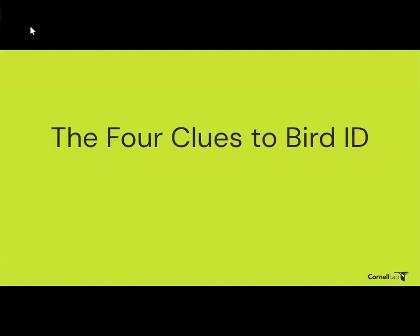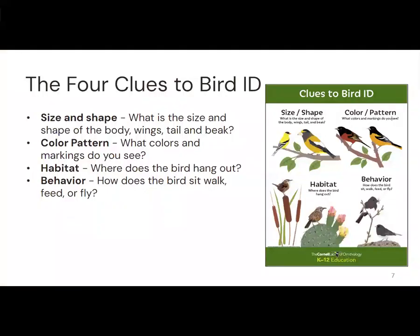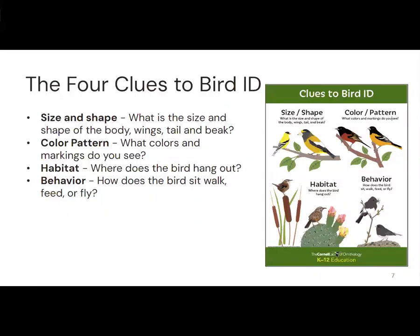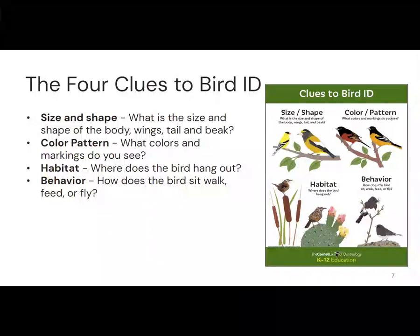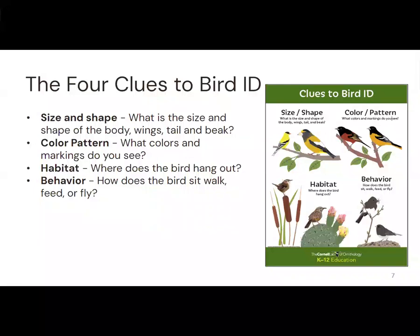Let's jump right in with the four clues to bird ID. There are four clues: size and shape, color pattern, habitat, and behavior. Size and shape is actually the first clue, which can be a little counterintuitive. I think when you first start looking at birds, your eyes are drawn so much to the colors that they can almost be a little distracting. I hope you'll see that size and shape can actually be one of the more fundamental parts of bird identification.